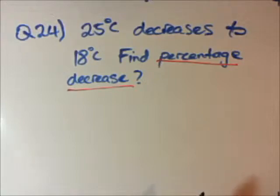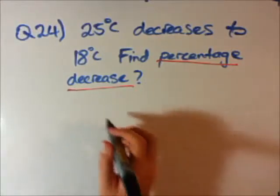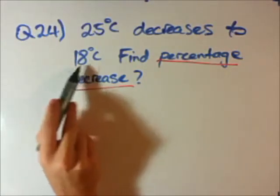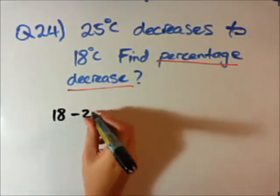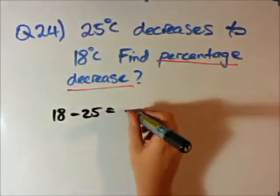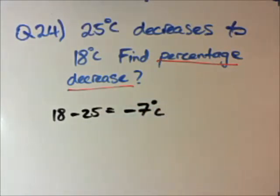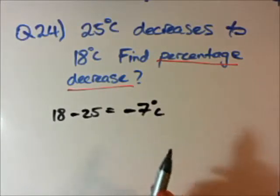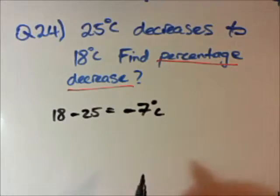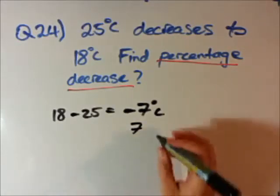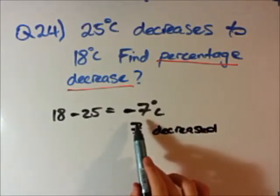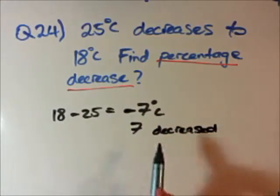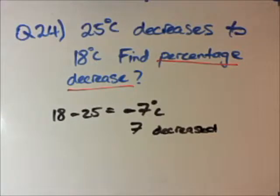Remembering the rule of thumb from question 23: we get the final amount — in this case 18 degrees — and subtract the original, which is 25 degrees. That gives us negative 7 degrees Celsius. Notice we have a negative answer, but rather than keep it negative, I'll say 7 degrees has decreased, so we get a positive number paired with the word 'decrease'.